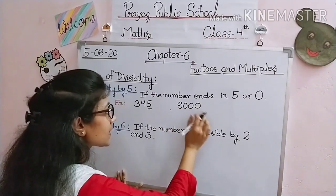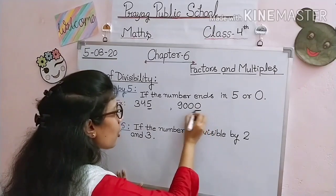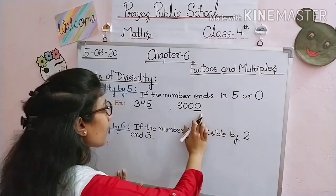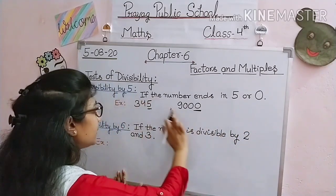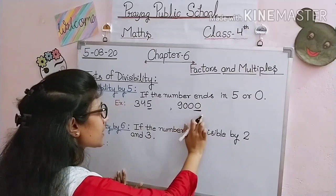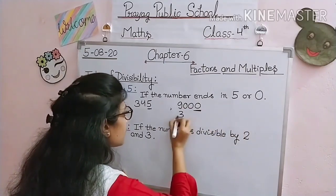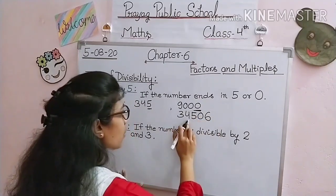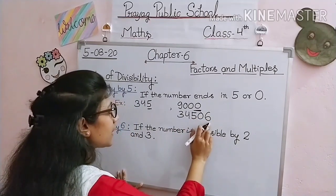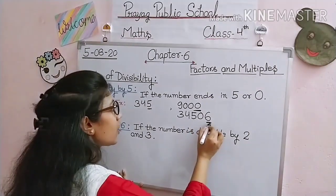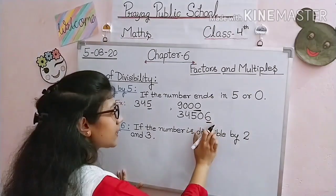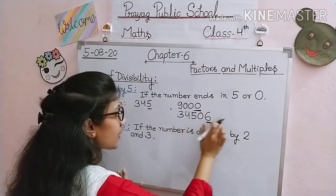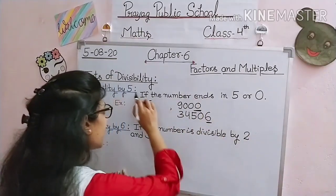Next example: 9000 — this number ends in 0, and since the number ends in 5 or 0, 9000 is divisible by 5. Another example: 34,506 — this number ends in 6, not in 5 and not in 0. Since it ends in 6, therefore 34,506 is not divisible by 5.